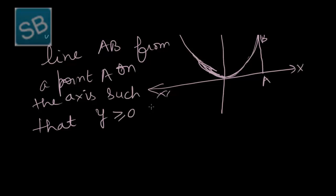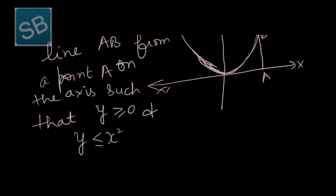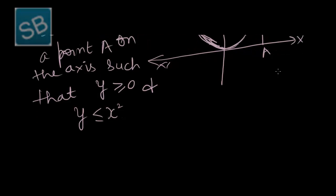Points lying on that line will satisfy y less than equal to x squared. If we suppose this is point 2, then y is equal to 4, and 4 is less than equal to 2 squared, which is 4. So we consider many such points and we see this inequality is satisfied.